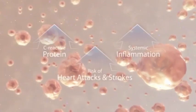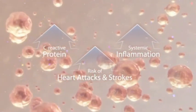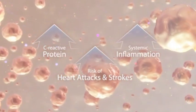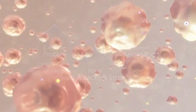CRP is an easily measured and useful marker of systemic inflammation. Many studies have shown that people who have high CRP levels are at increased risk of suffering heart attacks and strokes.